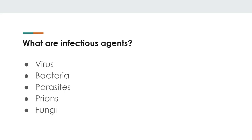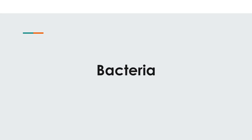So what are infectious agents? Your main general categories are these five: viruses, bacteria, parasites, prions, and fungi. I do not like the definition of parasites — I think it's way too broad. Honestly, all these other things are parasites by the canonical definition of a parasite. It's a very poor definition, but that's how it's defined, so that's what we have to deal with.